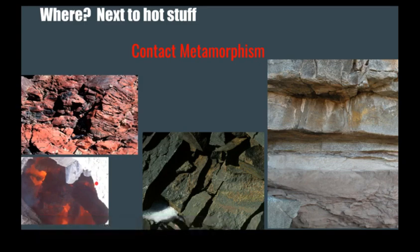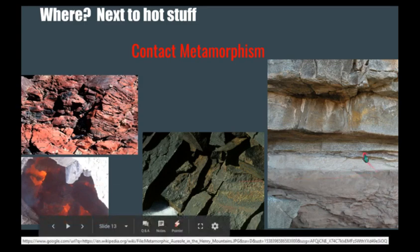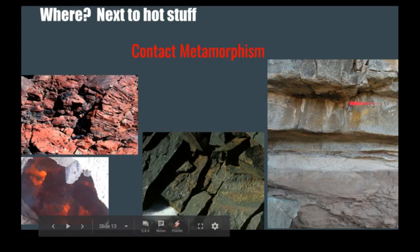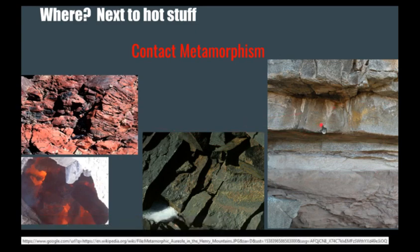Other ways you can create contact metamorphism include something like a coal fire or other natural fire underneath your rock. If you have any kind of heat source nearby the rock, you can create an altered area near that heat source significant enough to metamorphose your rock. It's most commonly found adjacent to igneous bodies, though.